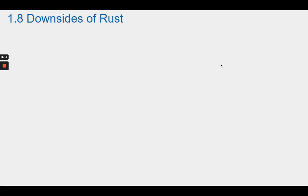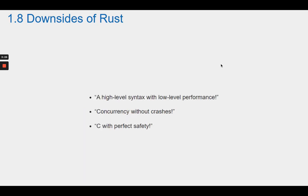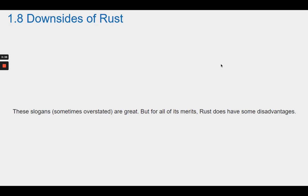Section 1.8 Downsides of Rust. It's easy to talk about this language as if it is the panacea for all software engineering. For example: a high-level syntax with low-level performance, concurrency without crashes, C with perfect safety. These slogans, sometimes overstated, are great, but for all its merits, Rust does have some disadvantages.